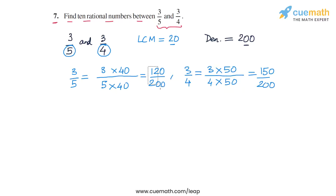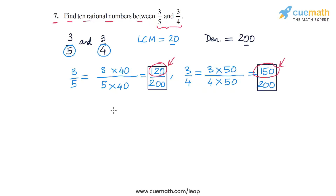We have rewritten the original rational numbers as 120/200 and 150/200. The numerators are 120 and 150, and there are more than 10 integers between these two numerators, so we can easily find 10 rational numbers. All we need to do is pick 10 integers between 120 and 150 as our numerators.